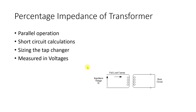Additionally, for parallel operation, if tap changers are installed, they should have the same number of taps and the same voltage level at each tap position.